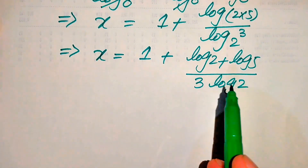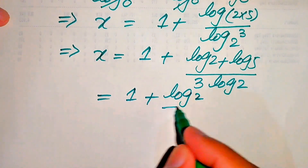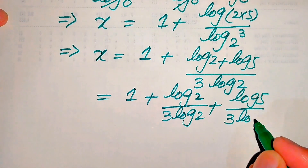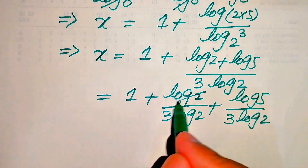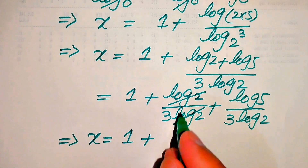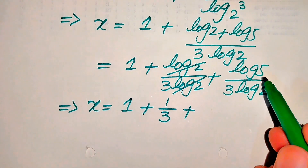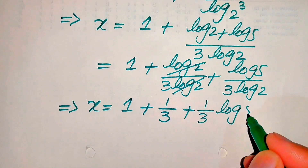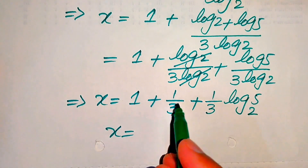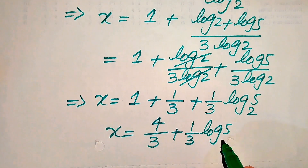In the next step, we need more simplification. We break this fraction and write it as log 2 divided by 3 times log 2, plus log 5 divided by 3 times log 2. Here log 2 cancels with log 2, giving 1 over 3. Then applying the change of base property, we combine the logs to get 1 over 3 times log base 2 of 5. Taking the LCM, 1 plus 1 over 3 equals 4 over 3, so x equals 4 over 3 plus 1 over 3 times log base 2 of 5.